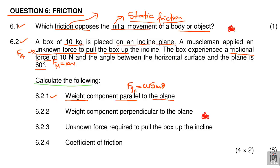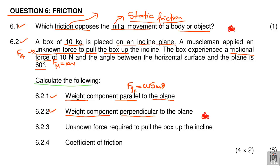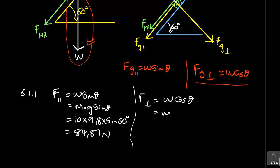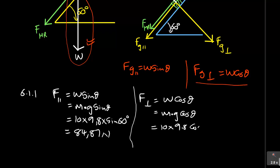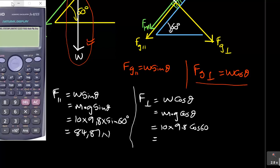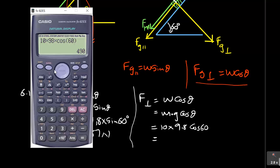Question 6.2.2 asks for the weight component perpendicular to the plane. FG perpendicular = W cos θ = m × g × cos θ = 10 × 9.8 × cos 60°. Cos 60° = 0.5. So the answer is 10 × 9.8 × 0.5 = 49 newtons. Remember, units are newtons because we are dealing with a force.